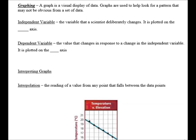A graph is a visual representation of data. The independent variable is the one that a scientist will change. It is plotted on the x-axis, which is the horizontal axis. The dependent variable is the variable that changes in response to the independent variable and it is plotted on the y-axis.